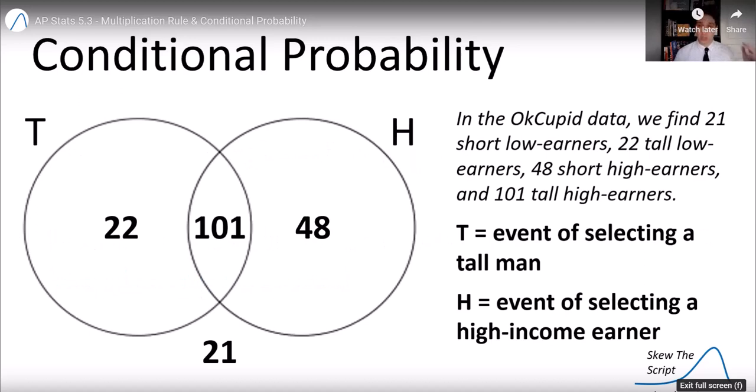So in the OkCupid data set, we find there were 21 short low earners, 22 tall low earners, 48 short high earners, and 101 tall high earners for a total of 192.